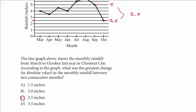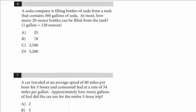Let's take a look at the next question, number six. A soda company is filling bottles of soda from a tank that contains 500 gallons of soda. At most, how many 20-ounce bottles can be filled from the tank? One gallon equals 128 ounces. You definitely will see a few unit conversion questions where you have to convert units, and you just have to be careful. Some students want to make an equation, but I think if you just sort of think about it, it's probably a little bit easier.